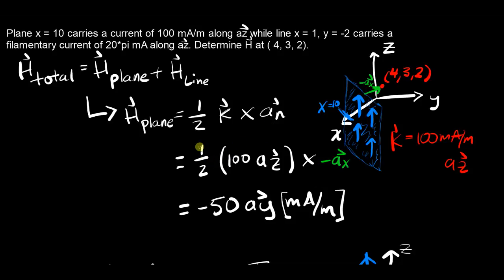So for this first part, we can plug in one half times 100 az cross, and I put negative ax here. And the reason for that is if the plane is here at x equals 10, and the point I care about is at the coordinates x equals 4, y equals 3, z equals 2, this point I care about is in the negative x direction from the plane. So that's why I take an to be negative ax. This normal vector should point in the direction of the point relative to the plane.